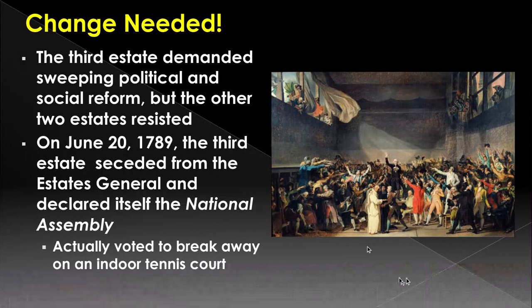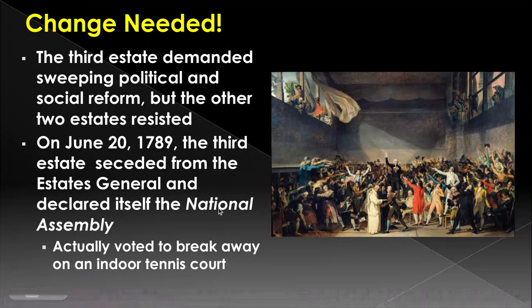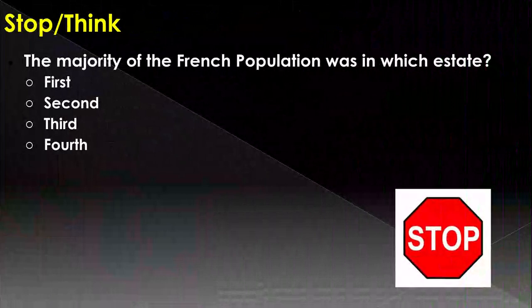So the Third Estate actually voted to say, we are leaving. This is called the Tennis Court Oath, and it starts a new thing called the National Assembly. This is what that bottom tier, the Third Estate, is now going to call themselves. When they do that, they actually say we're going to no longer listen to the king of France.